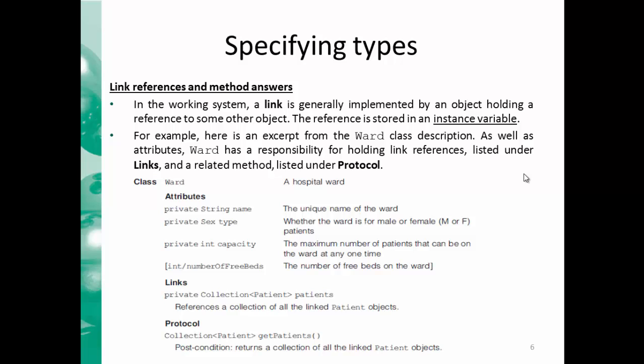In the working system, we have links between different objects and these links can be implemented and stored in an instance variable in case that variable has one value. We will find later that if the variable has more than one value, then it will be stored in a collection variable. Here you find an excerpt from the class world where you have the attributes given and the links also listed, and also the protocols.